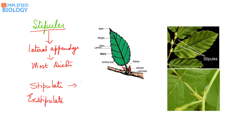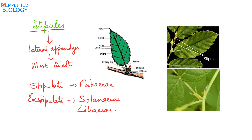In case of family Fabaceae, stipulate condition is seen, while in case of family Solanaceae and Liliaceae, estipulate condition is seen. These stipules are of various types: they are either leaf-like, modified into tendril, modified into spine, or completely fused with the leaf base. This is a stipule as seen in the case of the rose leaf.